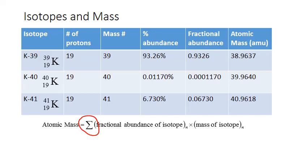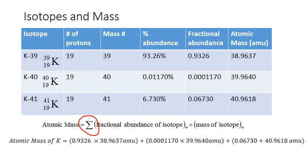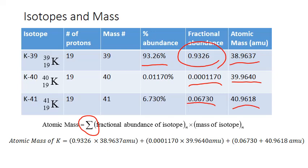So for example, since we have three isotopes of potassium, we're going to have three different terms in our atomic mass calculation. The first term is for potassium-39: we take the fractional abundance, which is simply the percent abundance divided by 100, so 0.9326, times the actual atomic mass for that isotope. The second term is the fractional abundance for potassium-40 multiplied by the actual atomic mass of potassium-40. And we do the same thing for the third isotope: the fractional abundance of potassium-41 times the actual mass of potassium-41.